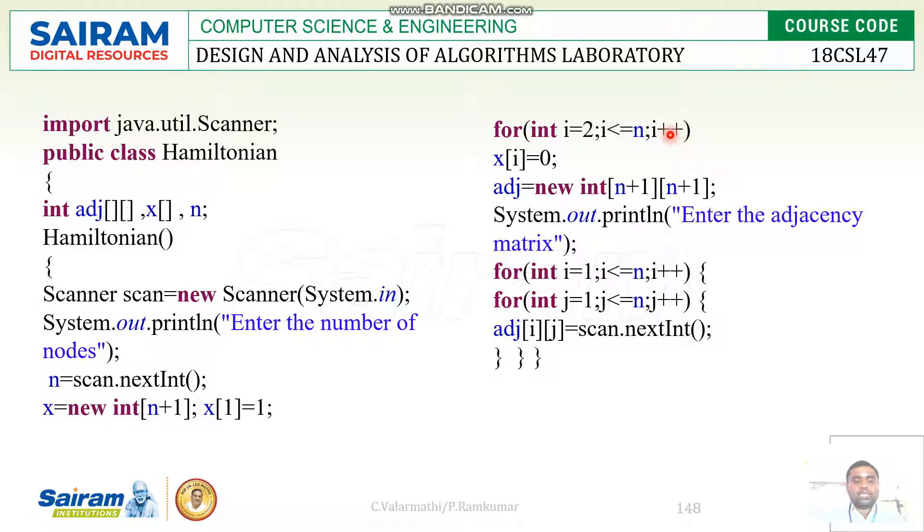Here I am getting the number of nodes. Using scan.nextInt, we will get everything and create the adjacency matrix. We need to get a two-dimensional matrix. I represents rows, J represents columns. By using two different for loops, we will get the adjacency matrix values.